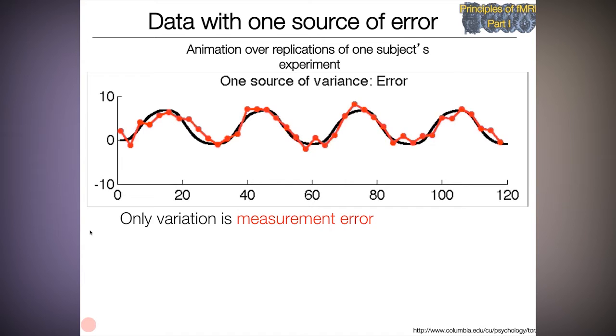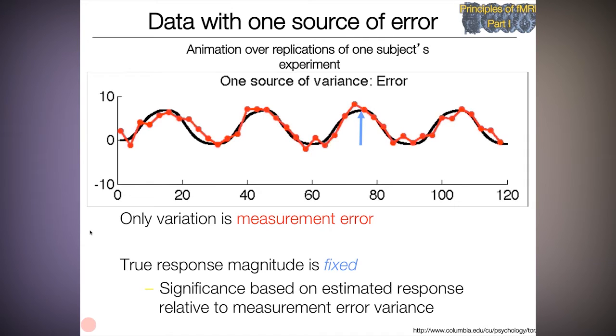So here the only source of variation is the measurement error itself. The true response magnitude is fixed. That's the on-off pattern in the black line that we're trying to estimate, and we're estimating that with error around that.